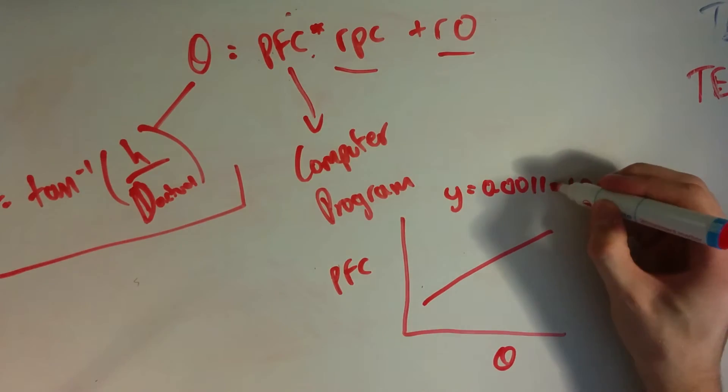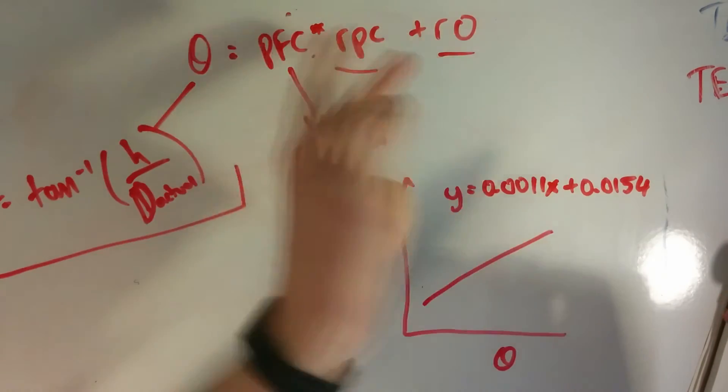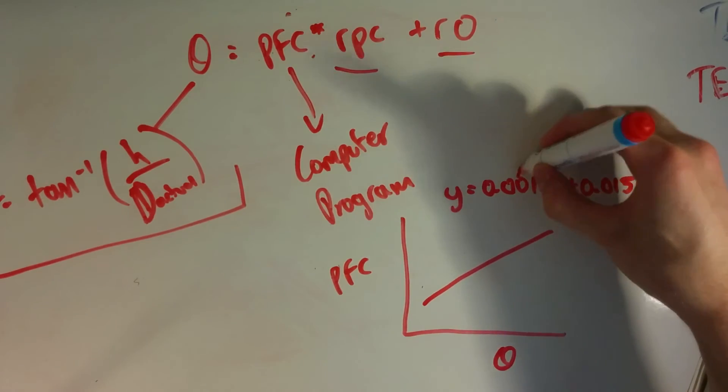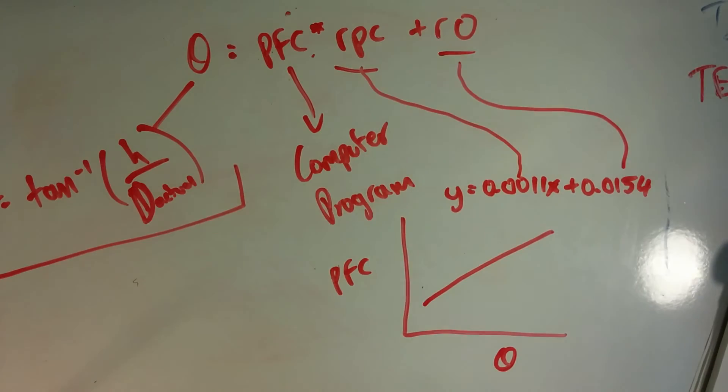And if we compare equations, so x in this case is pfc, I don't know they're kind of swapped around, but so 0.001 is rpc and r0 is 0.00154.